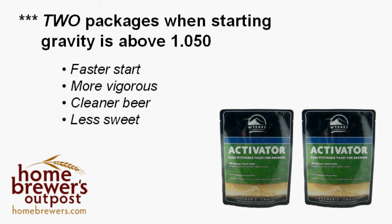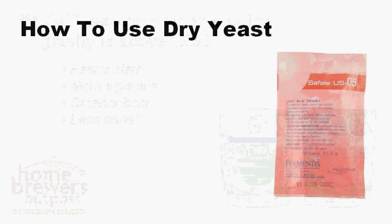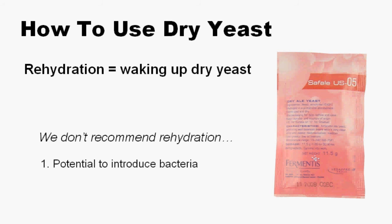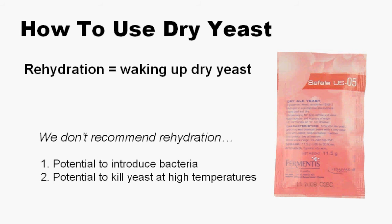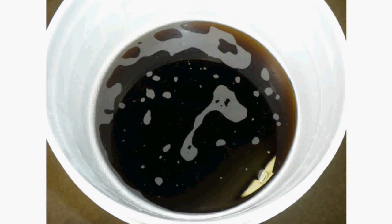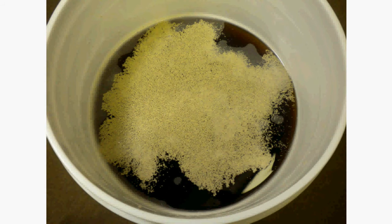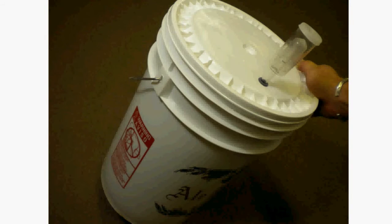Let's move on and talk about how to use dry yeast. Rehydration is a way of waking up your dry yeast, but we don't recommend it. This is an easy opportunity for critters to get in, and it's also really easy to kill your yeast if you don't control the temperature carefully. Just sprinkle your yeast on top of your cool wort and cover it. Come back in 15 minutes and give your sealed fermenter a good rocking to mix the yeast up and add air.